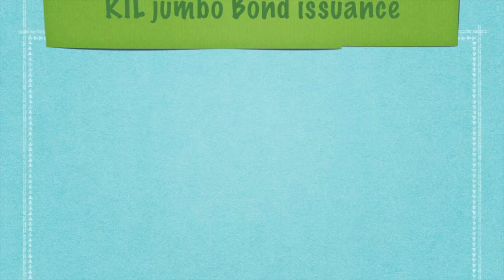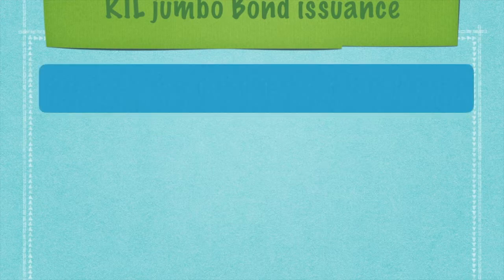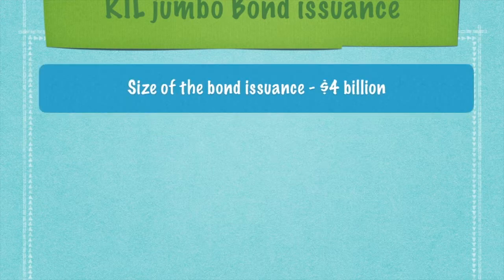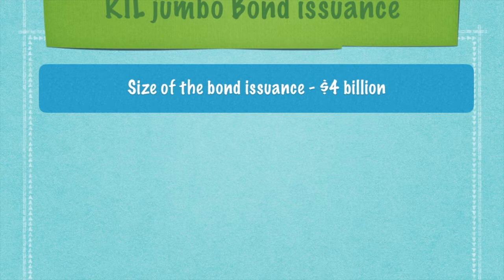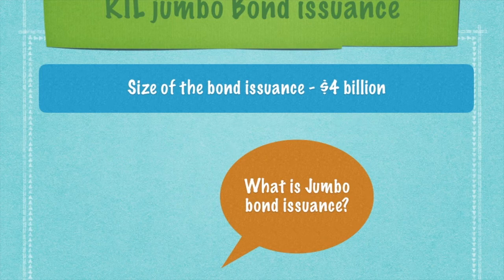Reliance Industries announced a jumbo bond issuance. This is the only company in Asia outside of Japan to have announced an issue that was almost worth 4 billion dollars. Translated into rupees, this amounts to a whopping 30,000 crore rupees. This size makes it qualify as a jumbo bond issuance.